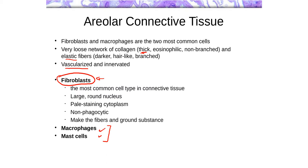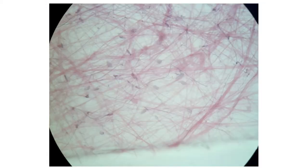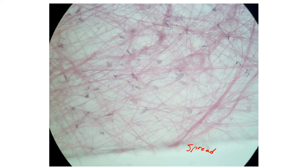What you have here is a spread slide — not a section. Someone took some of this tissue and pulled it apart, spreading it across a slide almost like a tablecloth, so you can actually see the spaces and how loose it is, and also see how these fibers are arranged.